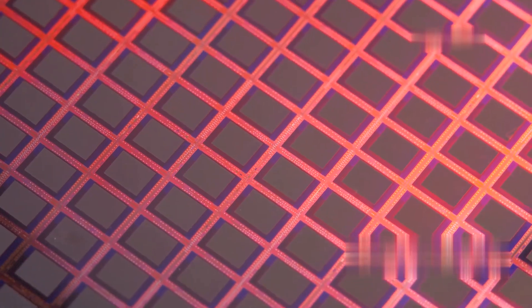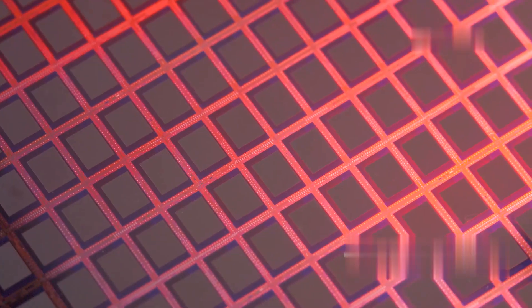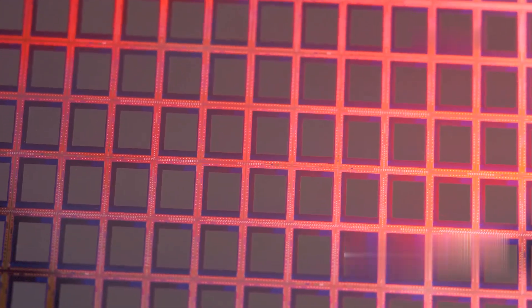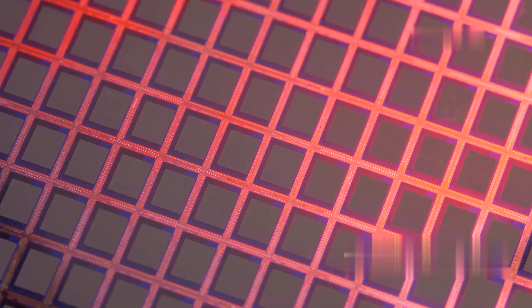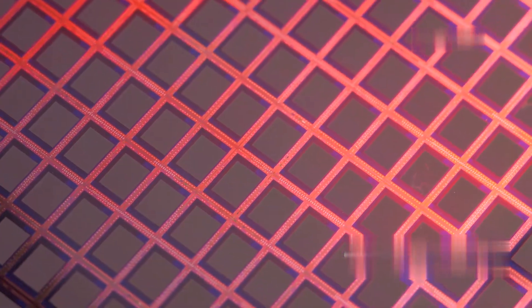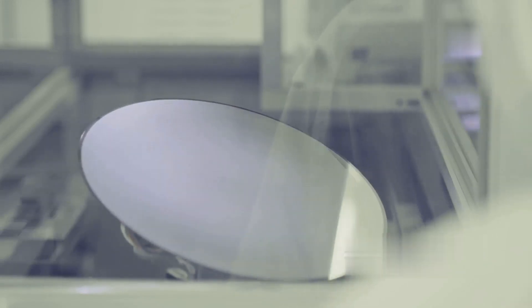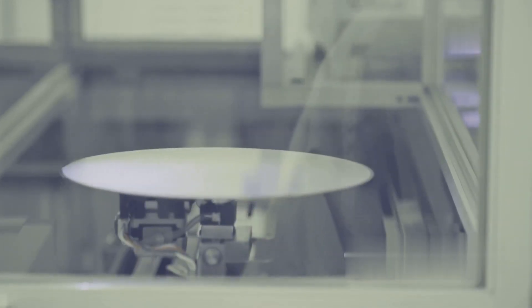The wafer is now ready for the intricate process of building transistors, a process that involves a series of carefully orchestrated steps, each adding another layer of complexity to the final device. The clean polished silicon wafer coated with a protective oxide layer is a blank canvas awaiting the intricate patterns that will define the functionality of the final integrated circuit.